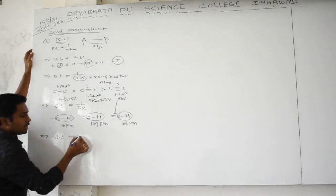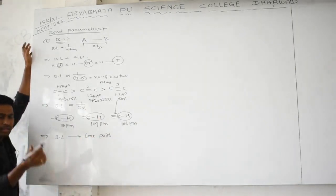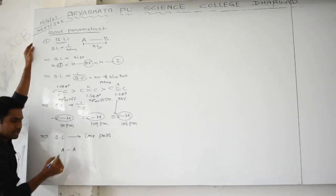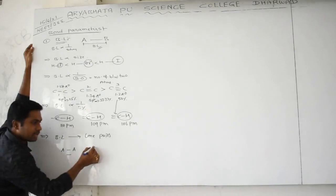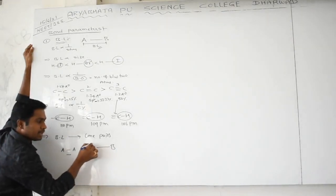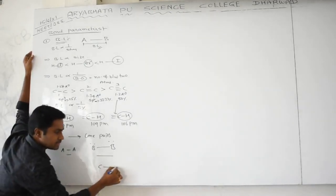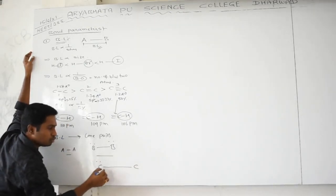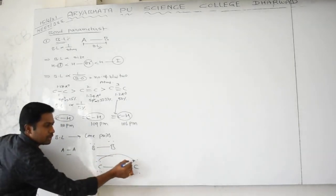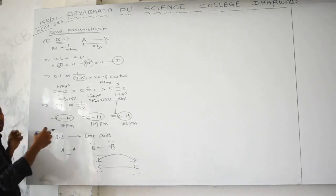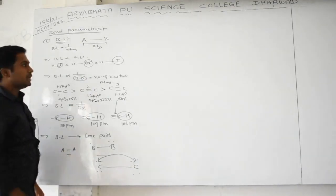Bond length is also affected by lone pairs. If atoms have no lone pairs, bond length is short. If atoms have one lone pair each, bond length is more. If atoms have two lone pairs each, lone pair–lone pair repulsions are very high, causing the atoms to move away from each other, thus increasing bond length.